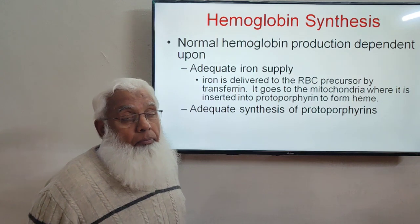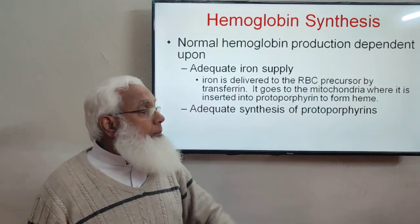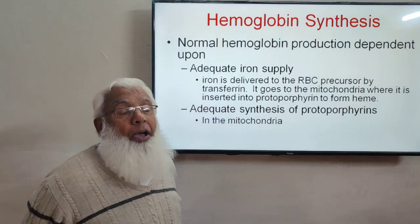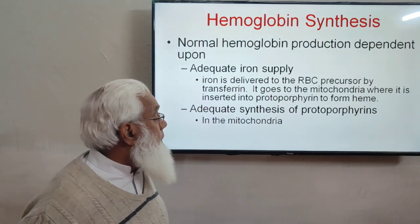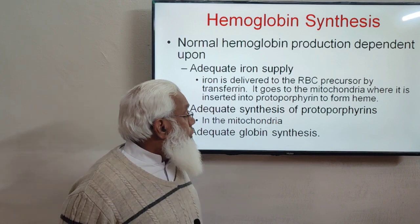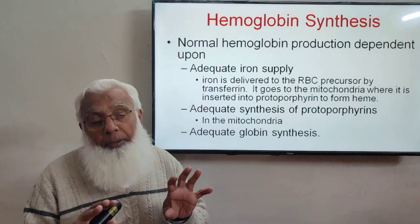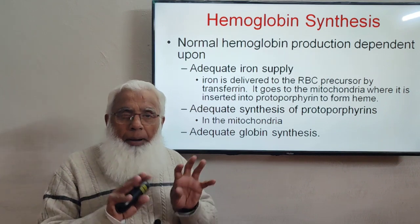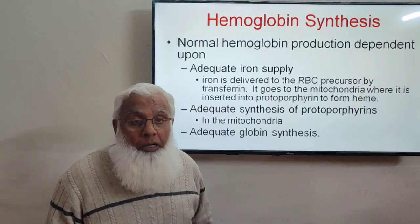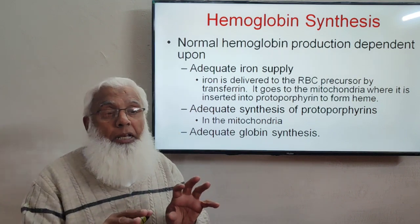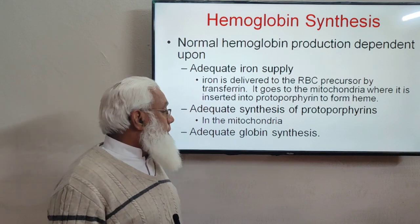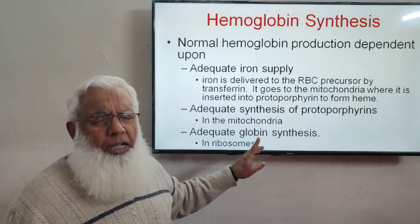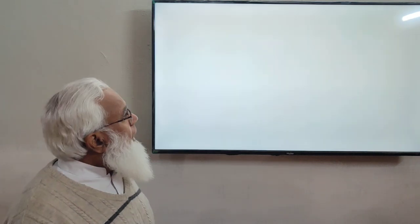Adequate synthesis of protoporphyrin, which is part of heme, occurs in the mitochondria. Heme then combines with a globin chain — a protein chain — to form hemoglobin, which is a conjugated protein. This is an iron-containing heme combined with globin. Globin is synthesized by the ribosomes, as all proteins are.